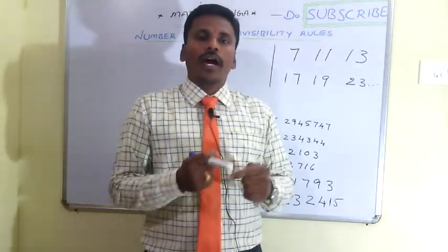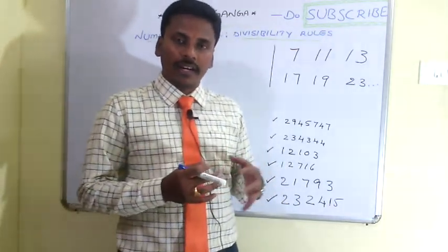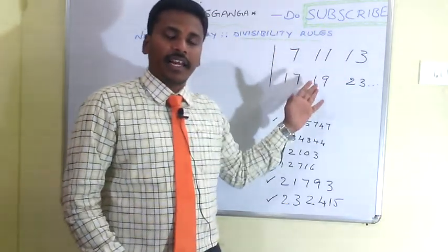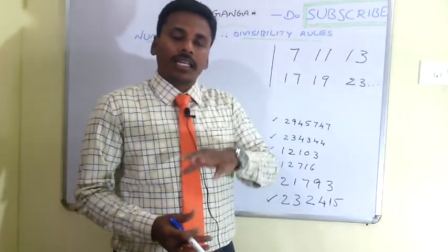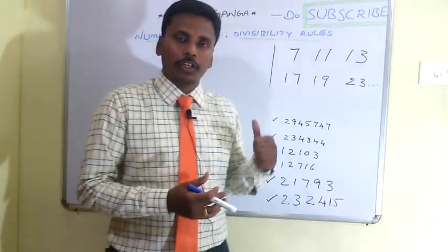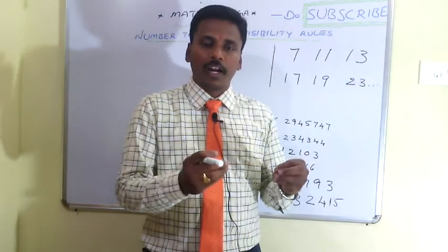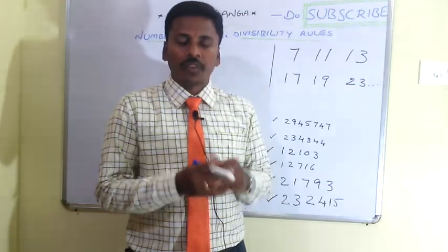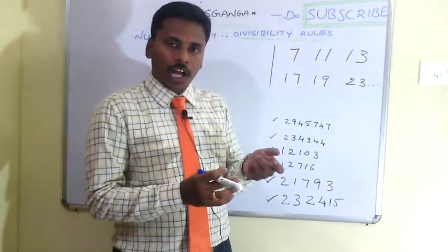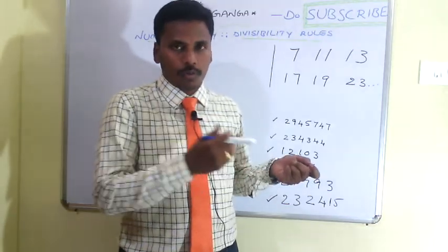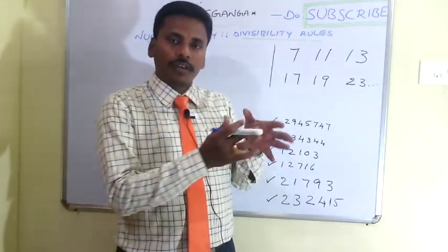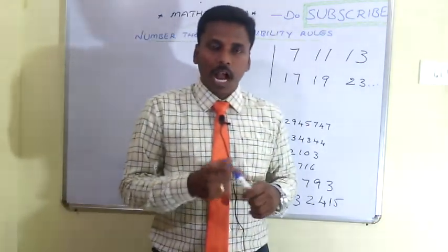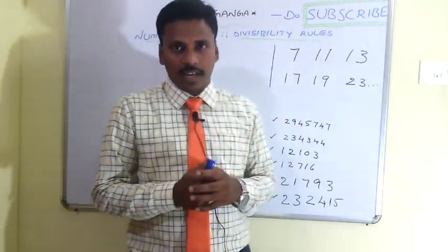Today in this video, we are going to discuss the way to generate the divisibility rules for the special prime numbers 7, 11, 13, 17, 19, 23, and so on. In the previous video, we discussed the magical combined rule to check divisibility for 7, 11, 13, which is the subtraction of the last three digits from the remaining number, continuing the process. Now in this video, we are going to discuss the oscillating rules for 7, 11, 13.